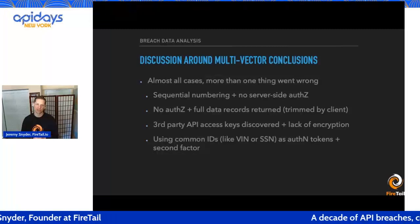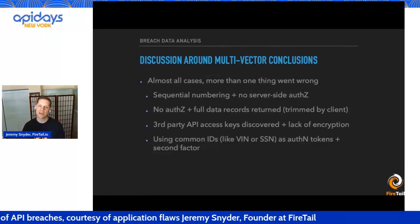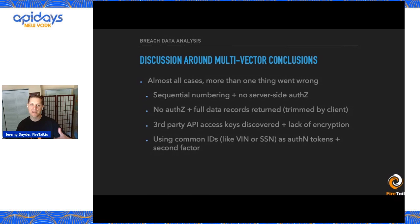To illustrate the multi-vector conclusion: we've seen cases with no server-side authorization, where someone is able to authenticate, get a token, issue follow-up API calls, and then see ID numbers. They can then enumerate other data records using sequential ID numbering — and we've seen that work in a number of cases.